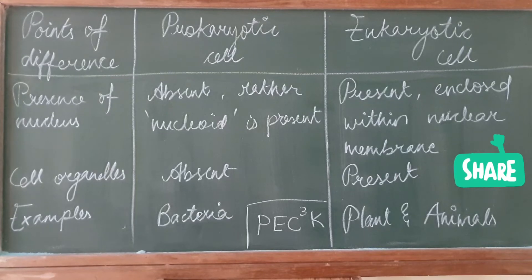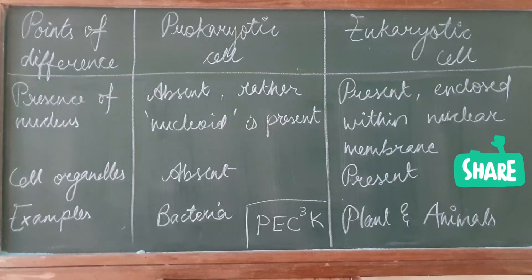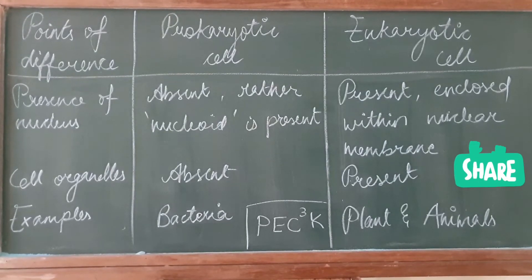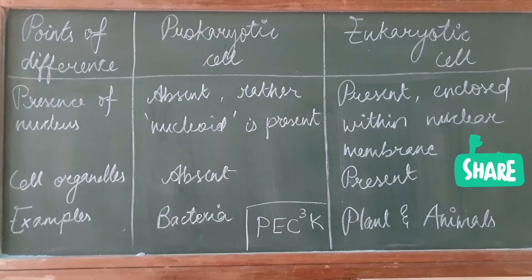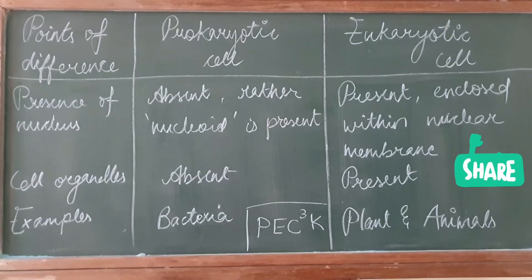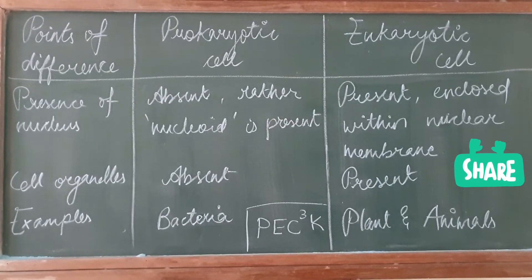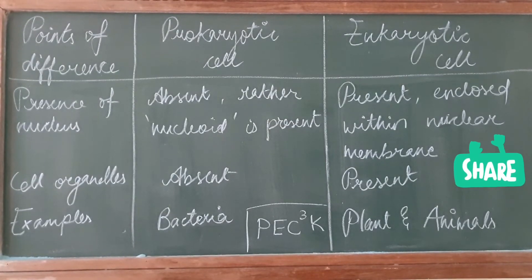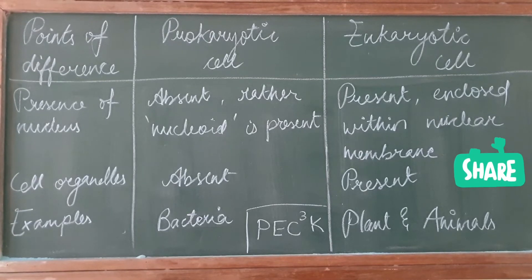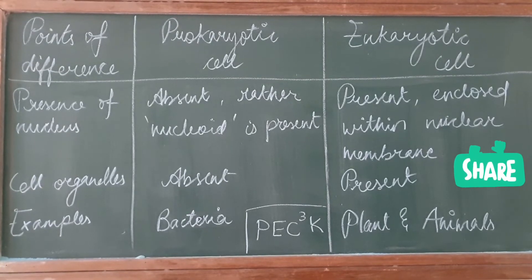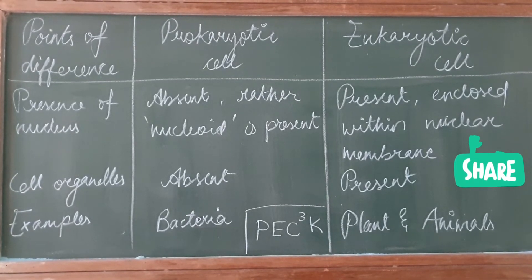The next point of difference is cell organelles. Mitochondria, endoplasmic reticulum, and Golgi apparatus are all cell organelles. They are all absent in prokaryotic cell, and they are present in eukaryotic cell.